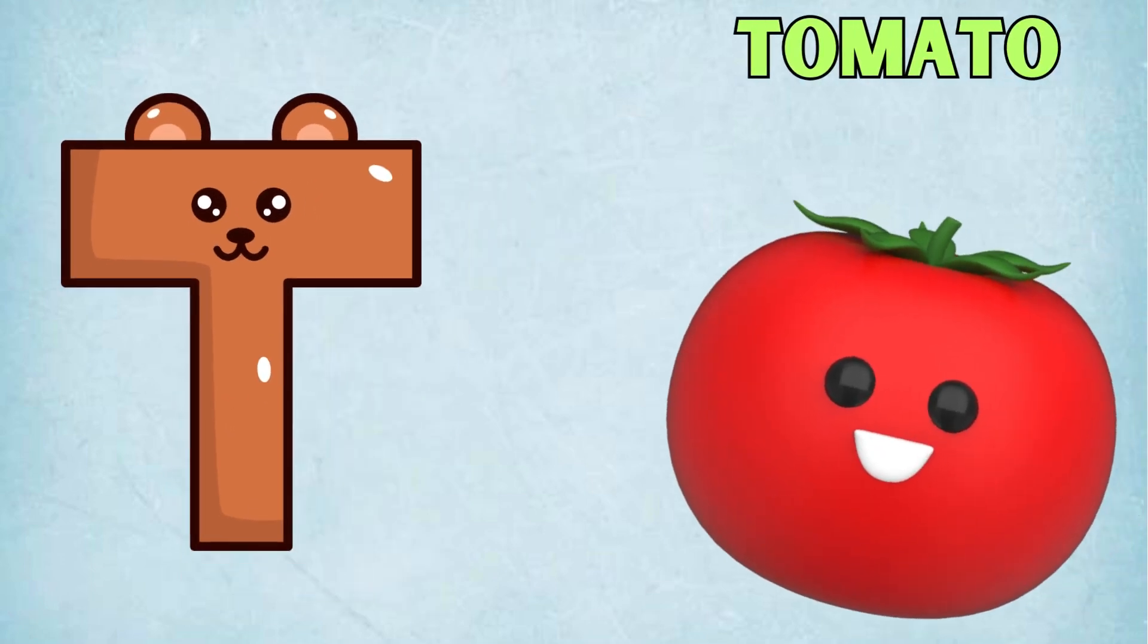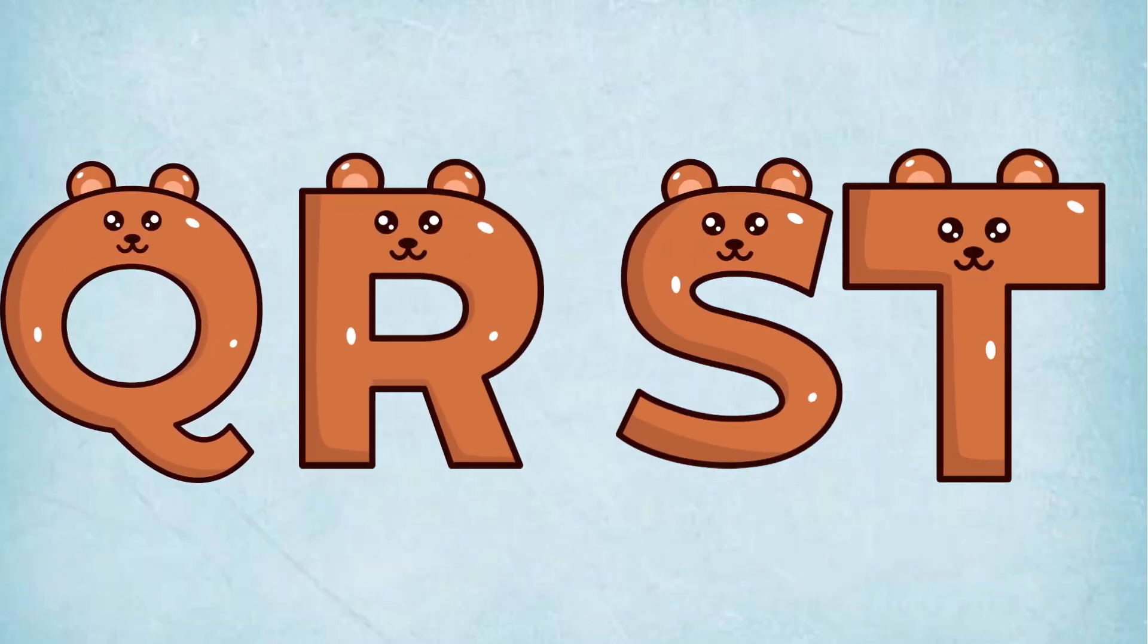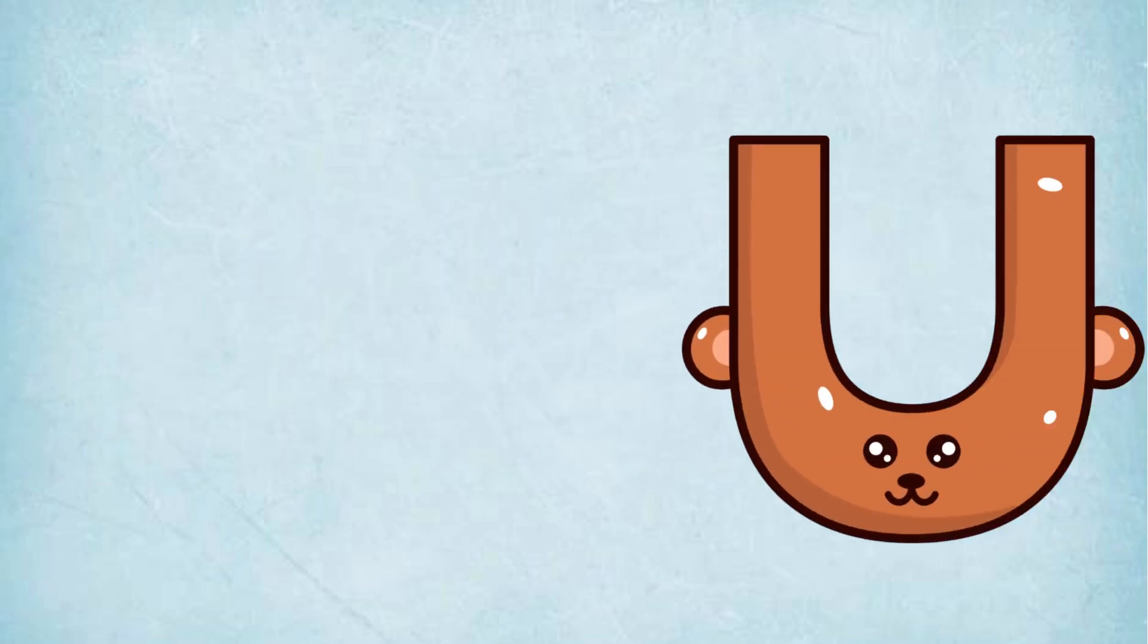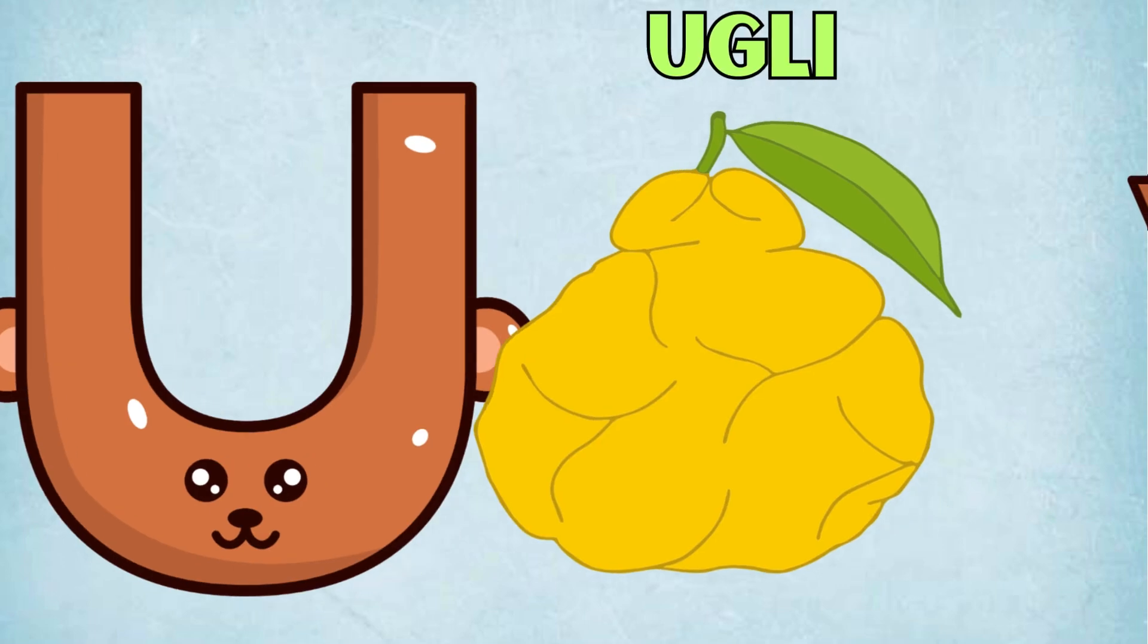T is for Tomato, T, T, Tomato. U is for Ruvli, U, Ruvli.